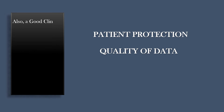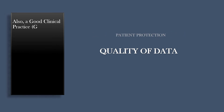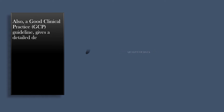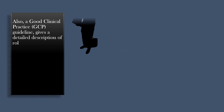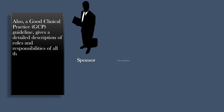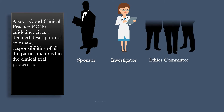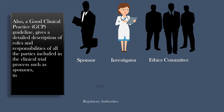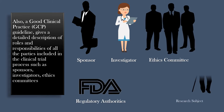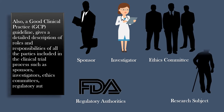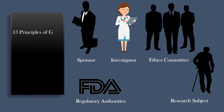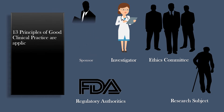Also, a Good Clinical Practice GCP Guideline gives a detailed description of roles and responsibilities of all the parties included in the clinical trial process, such as sponsors, investigators, ethics committees, regulatory authorities, and research subjects. 13 Principles of Good Clinical Practice are applicable for all of them.